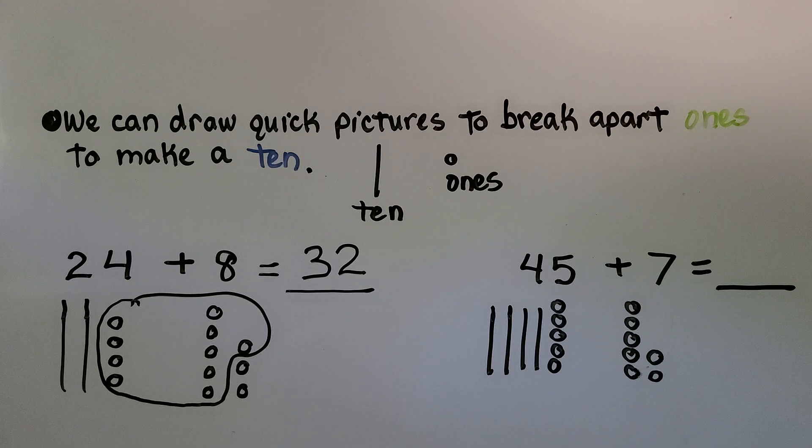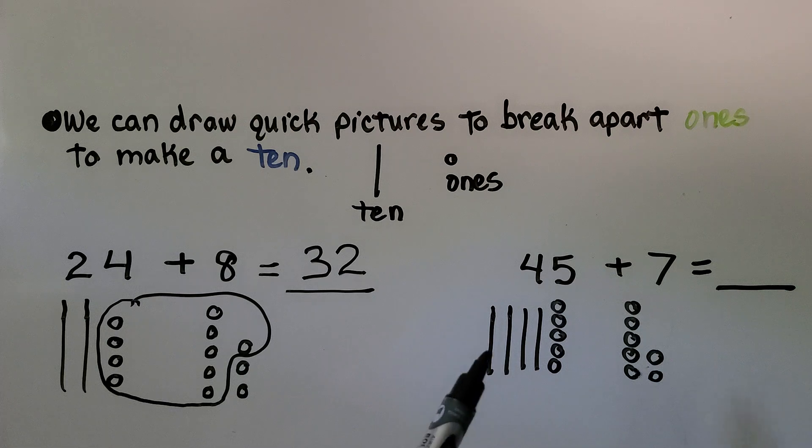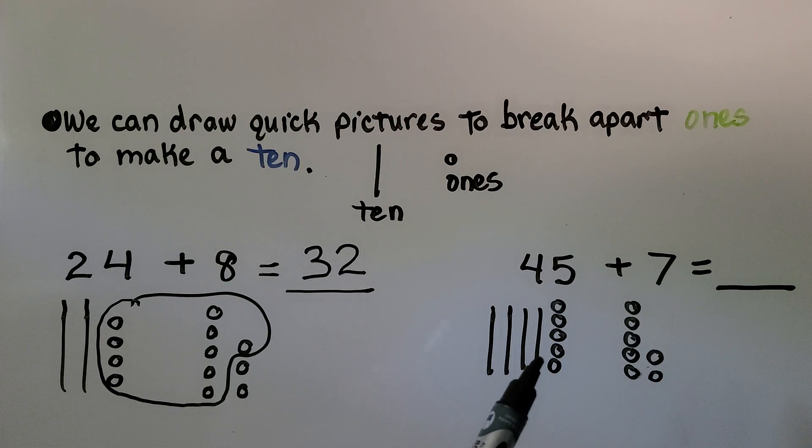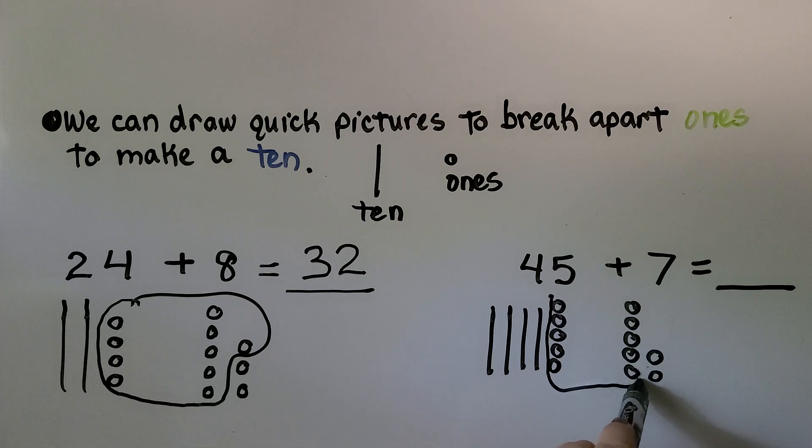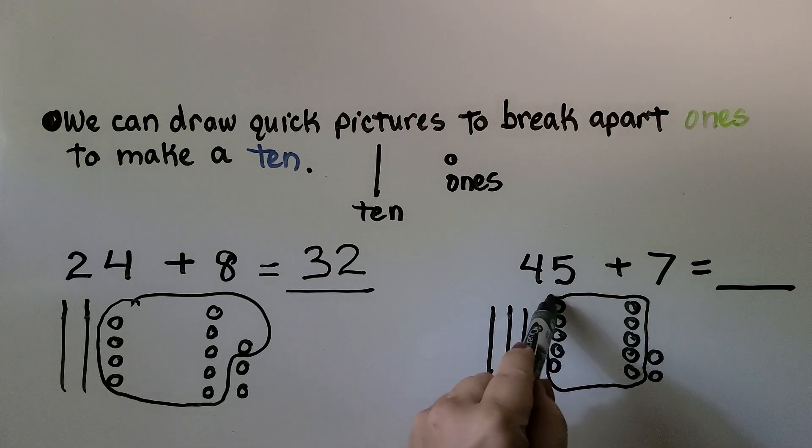Here we have 45 plus 7. 45 is 4 tens, 5 ones. We're going to add 7, so we made 7 little circles. And what does this 5 need to become a ten? It needs 5 more.